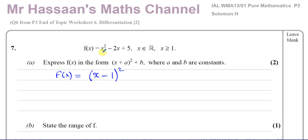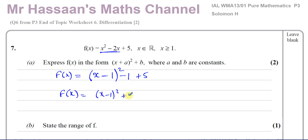If I square that, it will give me almost this expression except it gives me a bit too much — it gives x² − 2x but then also +1. So I don't want that +1, so I'll take away 1. This and the original are exactly the same, but then I have a +5 at the end. So finally f(x) equals (x − 1)² + 4. That is the expression for completing the square, where a = −1 and b = 4.